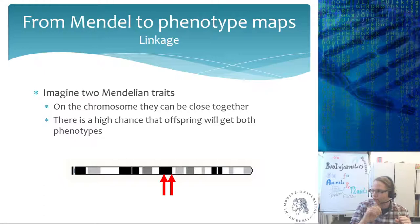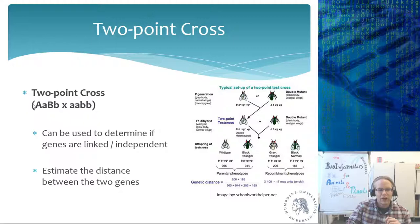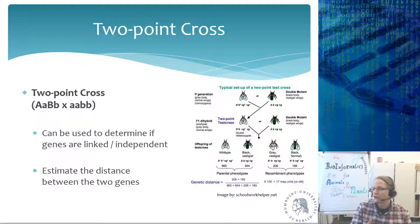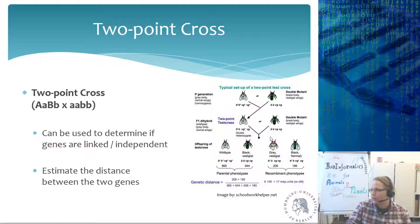This is called a two-point cross. A two-point cross takes a heterozygous individual (AB/ab) and crosses it with a homozygous individual (aabb). This can be used to determine if genes are linked or independent — whether on the same chromosome or different chromosomes. When they are on the same chromosome, you can estimate the distance between the two phenotypes: number of offspring with recombinant phenotypes divided by total offspring, multiplied by 100. In this example, there are 17 map units difference, meaning 17% of the F2 is recombinant.